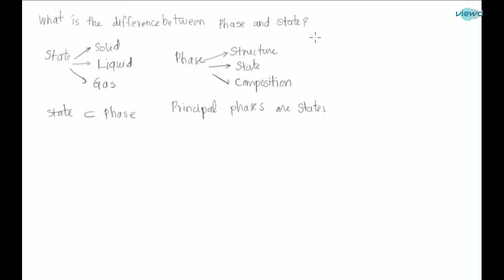Let us understand this difference between phase and state with an example. In engineering materials, we see terms like ferrite, which is alpha iron. On heating, it converts to gamma iron, which we call austenite. If you see the state of these ferrite and austenite, we observe that both are solids.